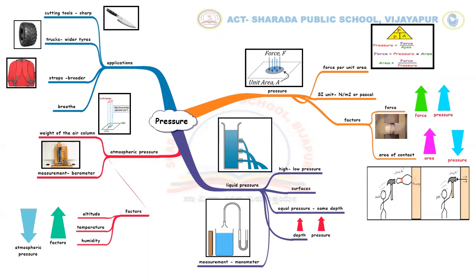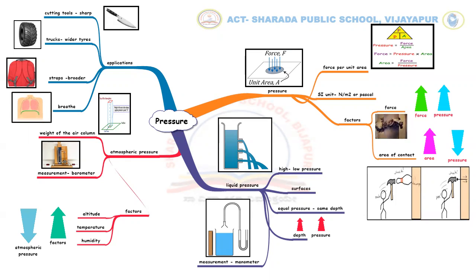Straps of school bags are usually broader than the straps of handbags. The broader straps help to reduce the pressure exerted on the shoulders. Air pressure helps us to breathe. When we inhale, our lungs expand, reducing the air pressure inside them. This helps the air outside the lungs, which is at a high pressure, to move into the lungs.